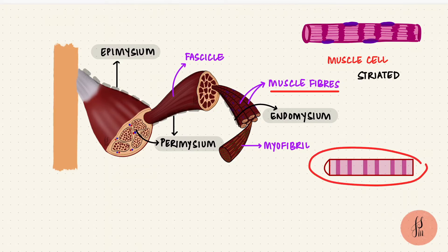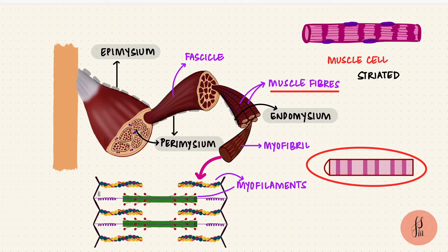What's responsible for these cross-striations? The myofilaments. The myofibrils consist of thick and thin filaments.